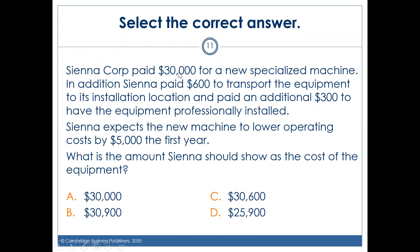Select the correct answer: Sienna paid $30,000 for a new specialized machine. They also paid $600 to transport it and $300 to have it professionally installed. Sienna expects the machine to lower operating costs by $5,000 in the first year. The acquisition cost is purchase price + shipping + installation = $30,900. The expected savings of $5,000 don't count because the first year hasn't happened yet — acquisition cost is just all costs necessary to get the asset ready for its intended use, so it's $30,900.